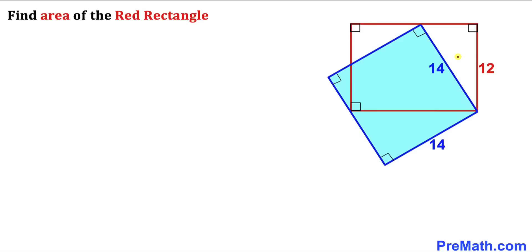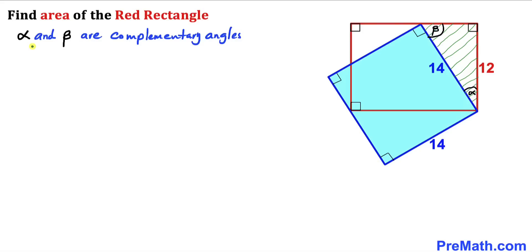Next, let's focus on these two triangles. We can see that both are right triangles, since this angle is 90° and this angle is 90° as well. Now let's focus on the shaded triangle. I'll call this angle alpha and this angle beta. We can see that alpha and beta are complementary angles — in other words, their sum equals 90°.